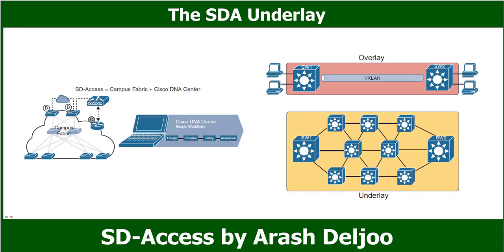First and foremost, you must be careful not to disrupt the current network while adding new SDA features. Because of the possibility of harming existing production configuration, DNA Center should not be used to configure the underlay if the devices are currently used in production — DNA Center will be used to configure the underlay only with deployments that use all new hardware. The existing hardware must be from the SDA compatibility list, with different models supported depending on their SDA roles, and device software levels must meet the requirements based on those roles.